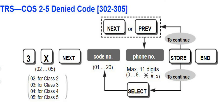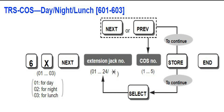Once we assign COS settings, then we can set up toll restriction. Toll restriction program numbers are 601, 602, and 603 for day, night, and lunch respectively.